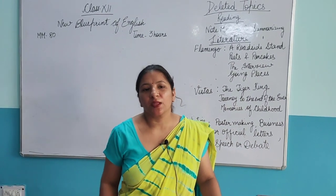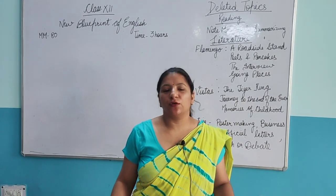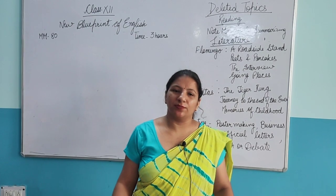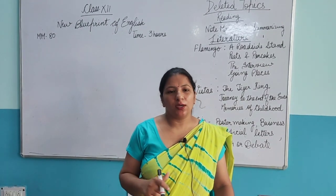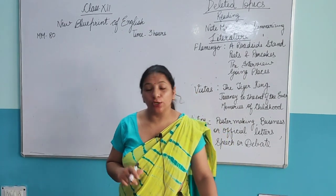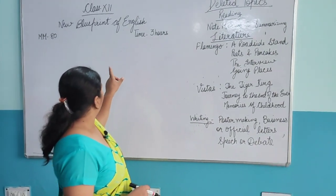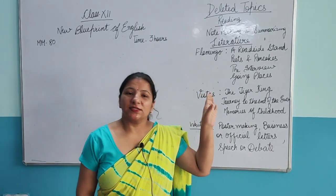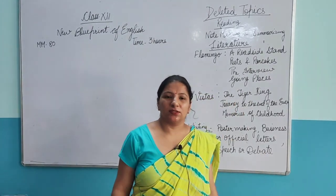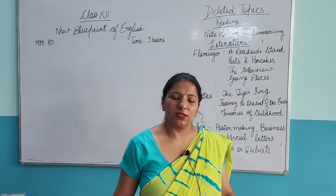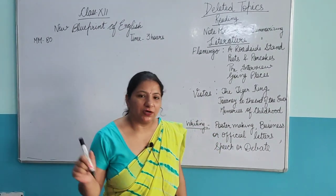CBSE has realized the situation and has reduced 30% of the syllabus from all subjects from class 9th to 12th. So today I am going to tell you the new blueprint of class 12th English. It will be of 80 marks — as it started last year. Up to the year before last, the paper was of 100 marks, so now it will be of 80 marks.